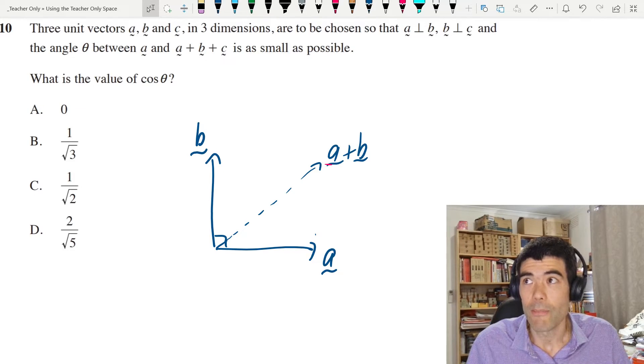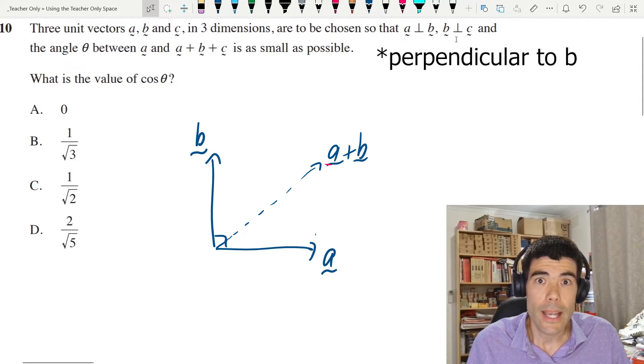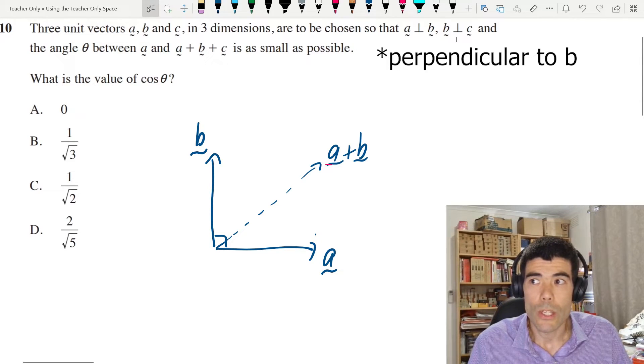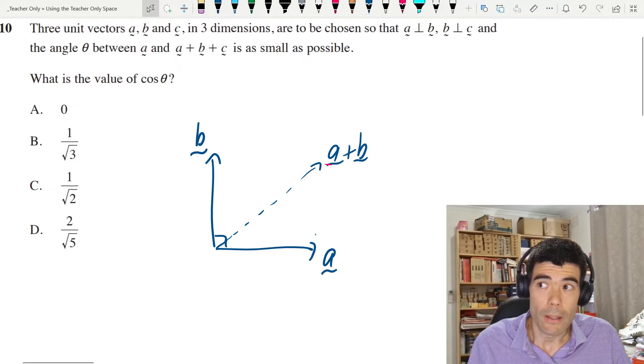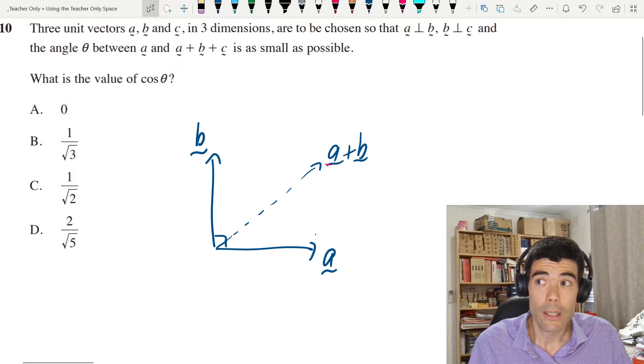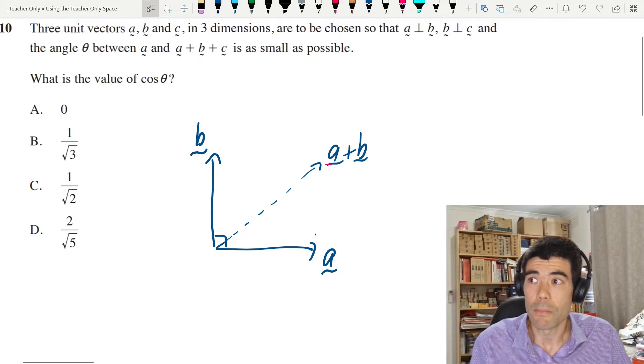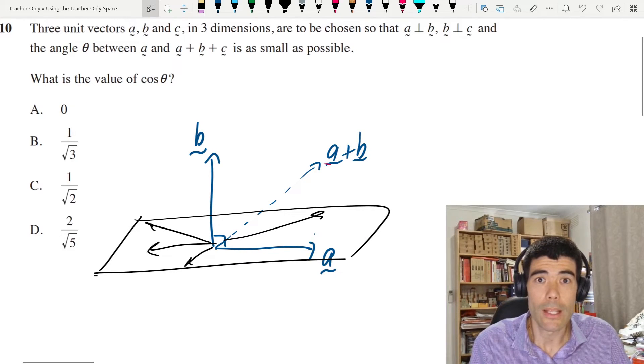It's a unit vector. It has to be perpendicular to b. It doesn't say it has to be perpendicular to a. So actually we've got some freedom for where we can place c. It could be parallel to a. It could be perpendicular to a as well. It has to be perpendicular to b. So actually c could lie anywhere in this plane.